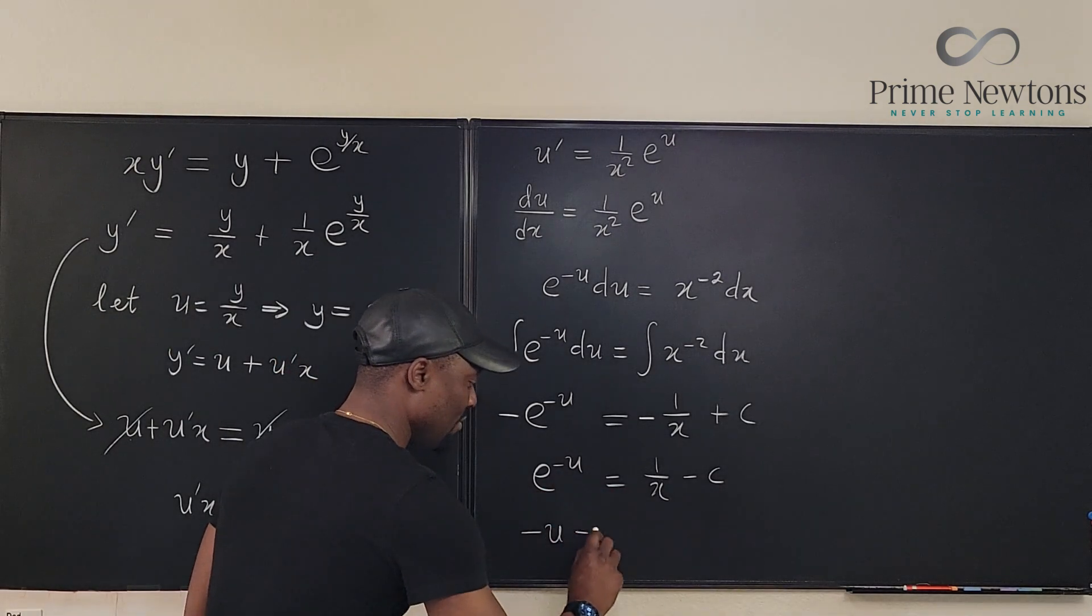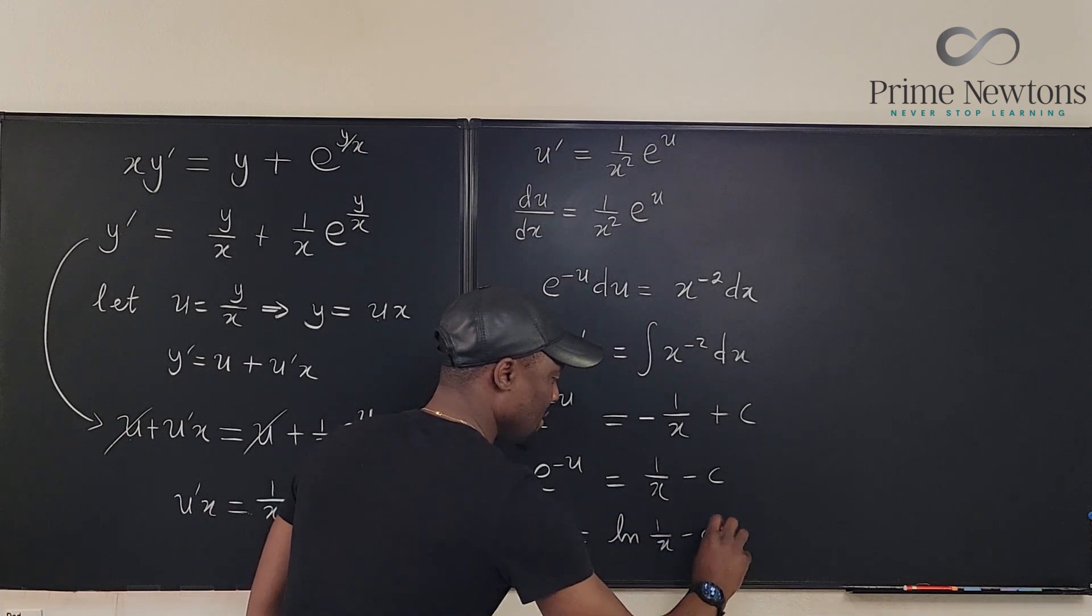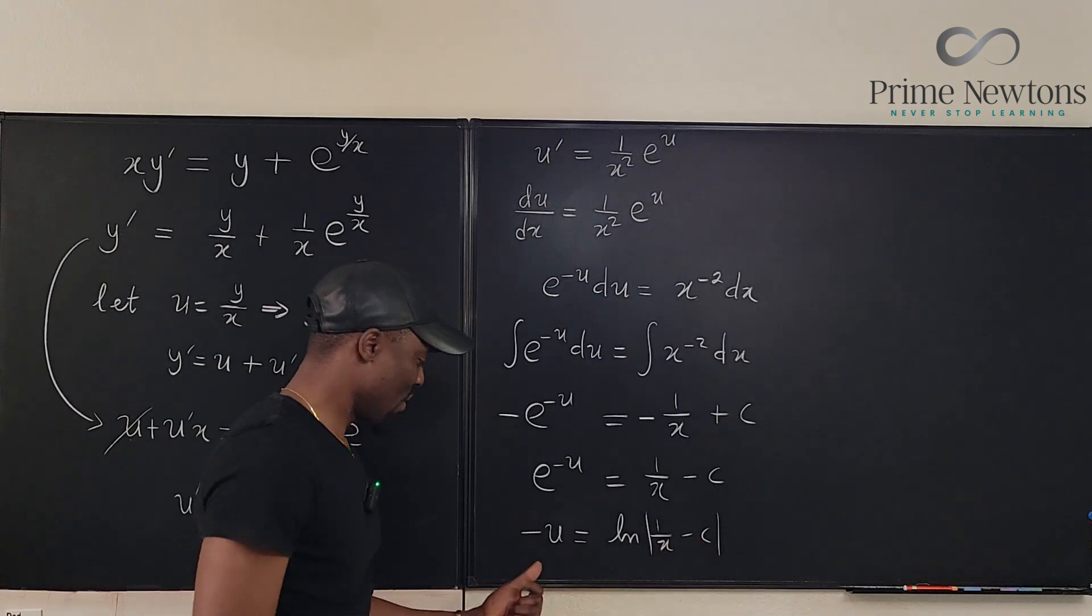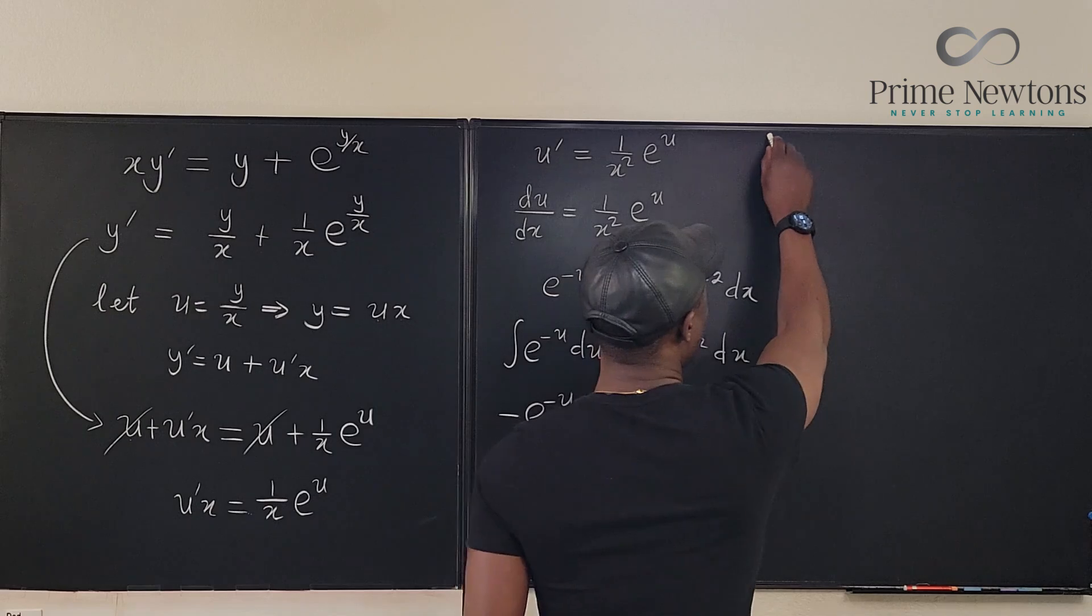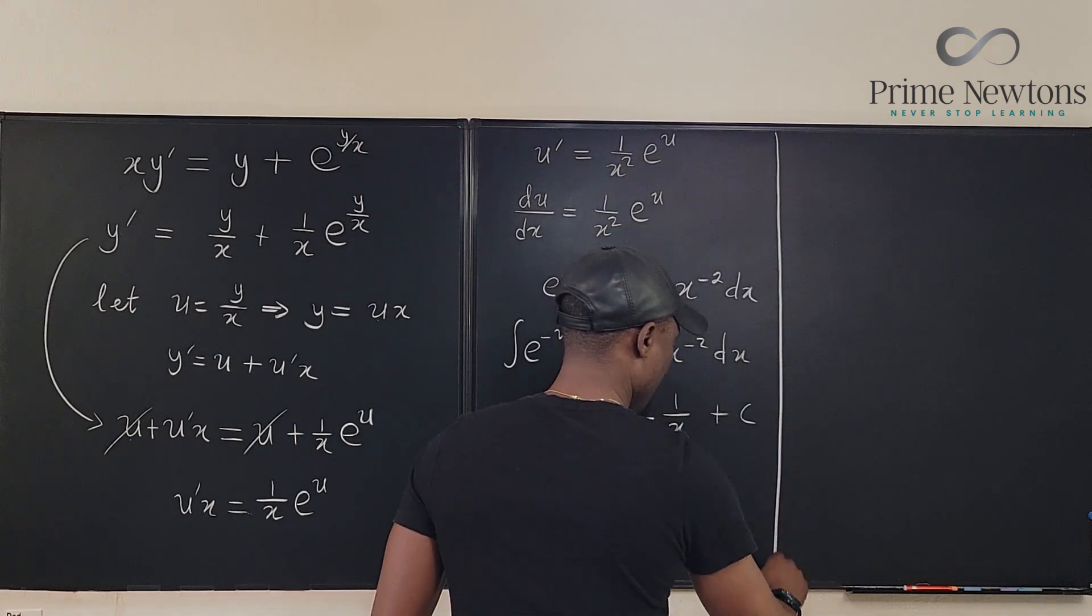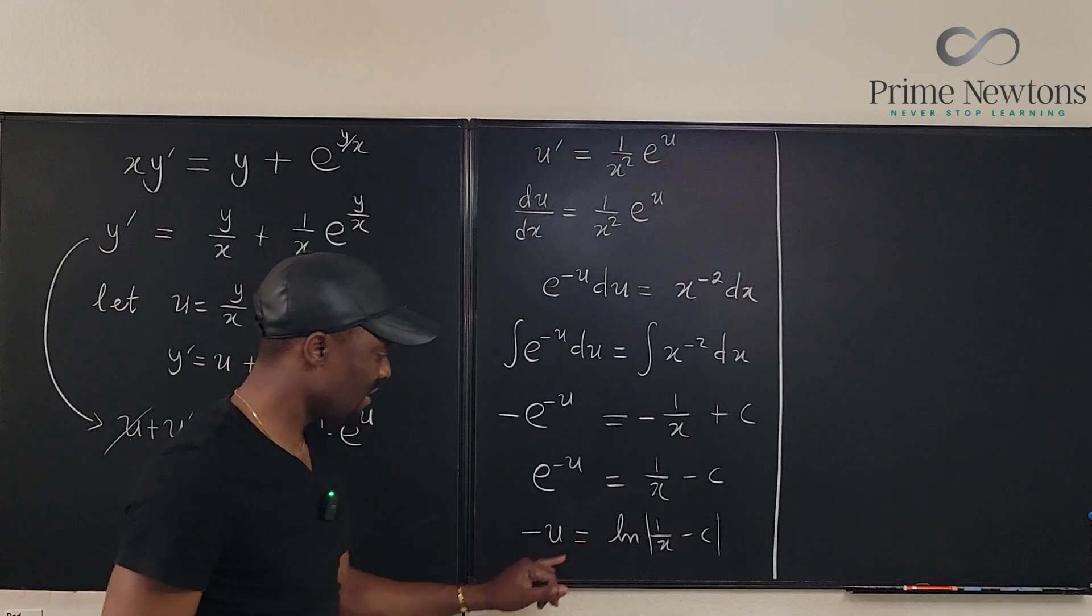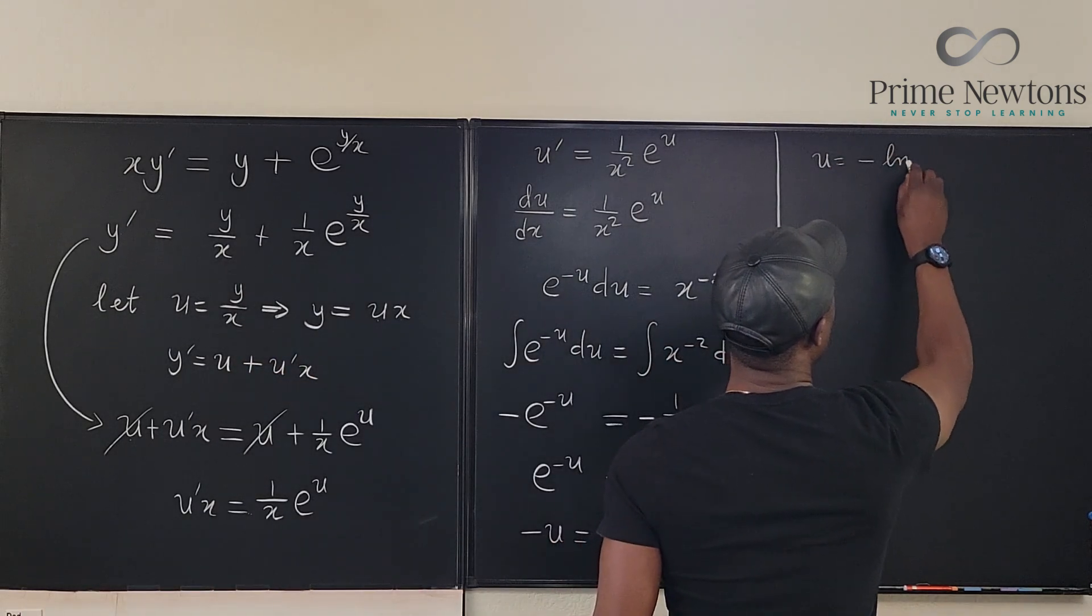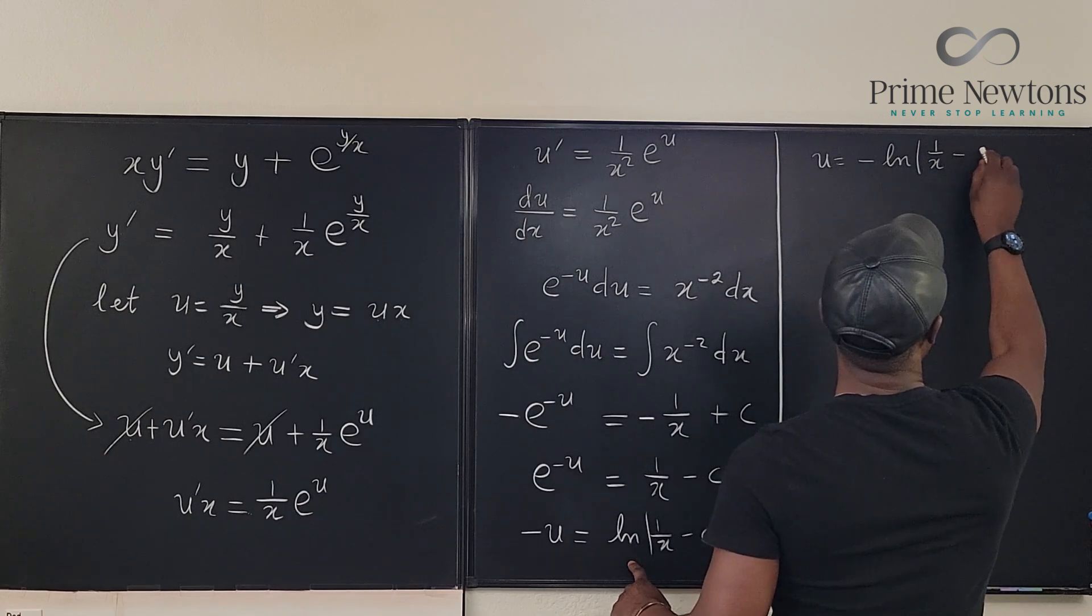Now if we take the natural log of both sides so we can free this guy we get negative u will be equal to the natural log of 1 over x minus c. Remember this could be plus c or minus c it doesn't matter what you write here. And now we can multiply both sides by a negative. If we multiply both sides by a negative we're going to get u equals negative natural log of 1 over x minus c.